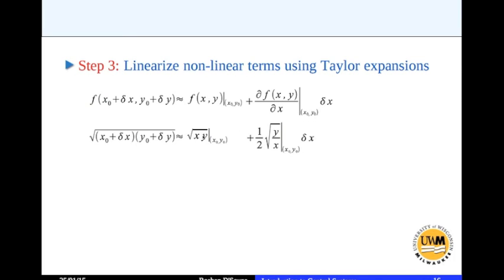You evaluate x0, y0 plus partial of f with respect to x evaluated x0, y0 times delta x. Now if you do the partial of this function with respect to x, you will get this function, you evaluate x0, y0 times delta x. And similarly, partial of f with respect to y evaluated x0, y0 times delta y. That is nothing but half root of x divided by y evaluated at x0, y0 times delta y.